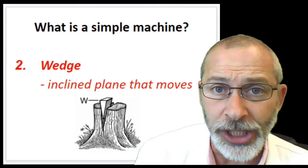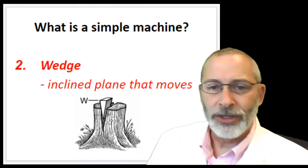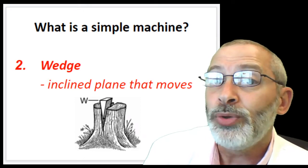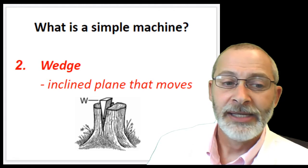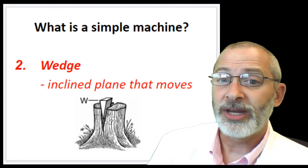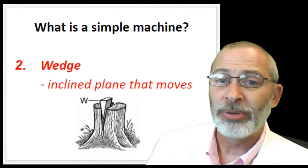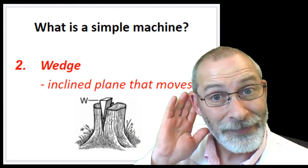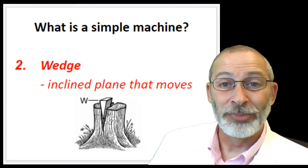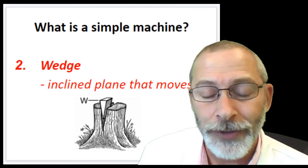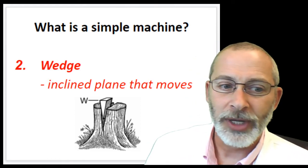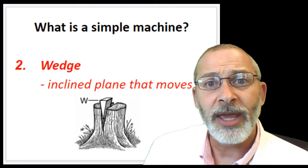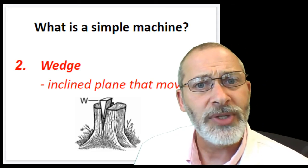Number two is a wedge. A wedge is an inclined plane that moves — an inclined plane that moves. Here's a great example in this picture: a wedge. It's the simplest type, simply called a wedge, and this one is being used to split lumber. Why don't you pause for a moment and see if you can think of other examples of wedges.